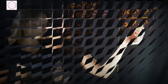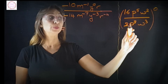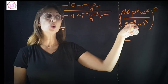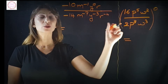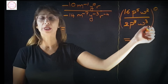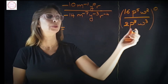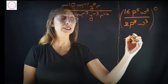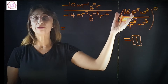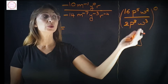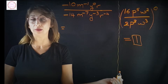Look at this example: 16p power 5 times w power 2 over 2p cubed times w power 3, all to the power of 0. We don't have to do anything inside — we just apply the rule that anything to the power of 0 equals 1. So the answer is simply 1.